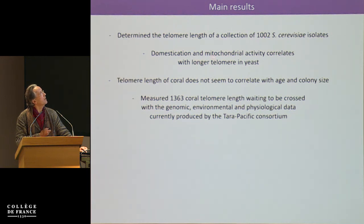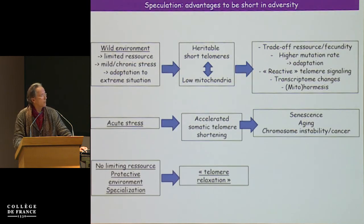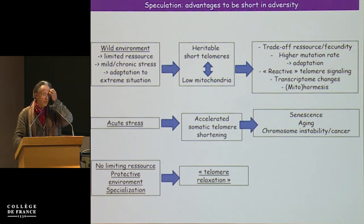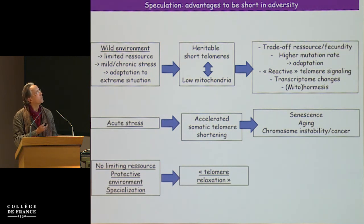To summarize the main results: we have a collection of 1,002 Saccharomyces cerevisiae with a link to domestication, which I think is very important and needs further thought. The telomeres of coral do not seem to follow the same cycle as ours and do not correlate with age — coral is not the only animal like that, but it's one of them. We are in the middle of the Tara work. I want to speculate a bit to tell you why I'm excited to pursue this experimentally.